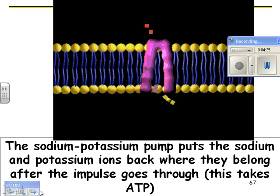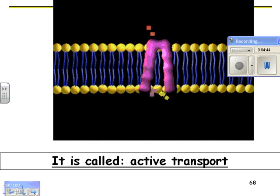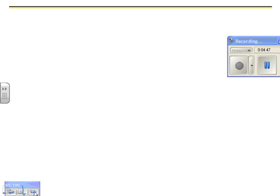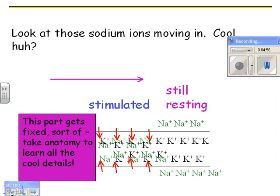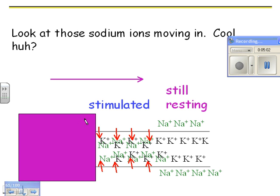So the sodium-potassium pump puts the sodium and potassium ions back where they belong after the impulse moves through. And that takes ATP. So this is called active transport. What actually happens here is the potassium comes out, which is kind of weird, and the sodium stays in. I can talk to you in class about why that is. But then you have the sodium-potassium pump forcing every single sodium out and every single potassium in. And that takes energy.